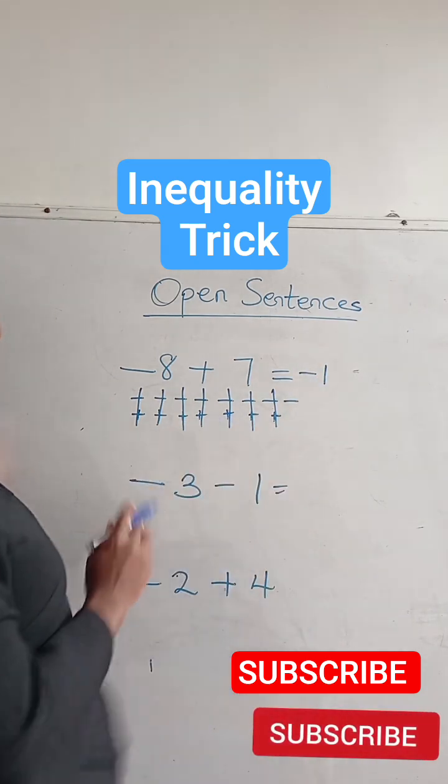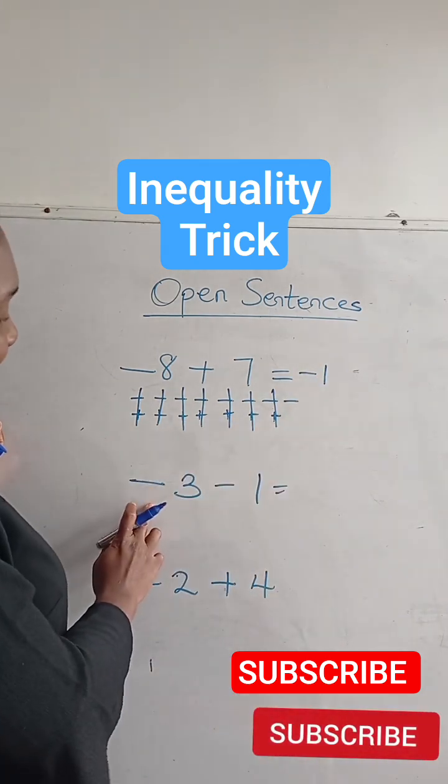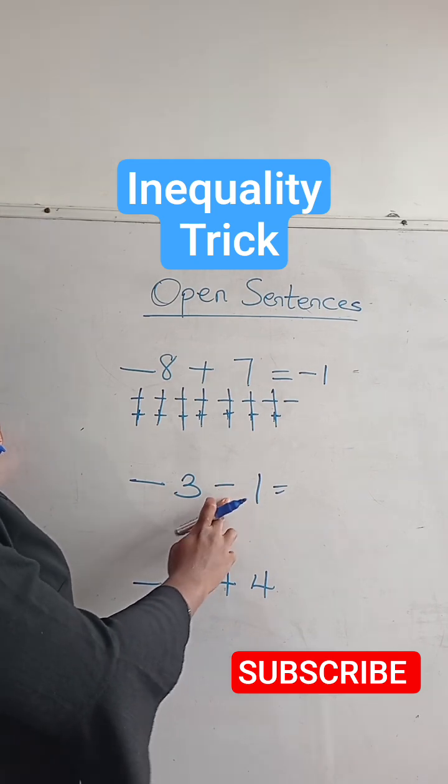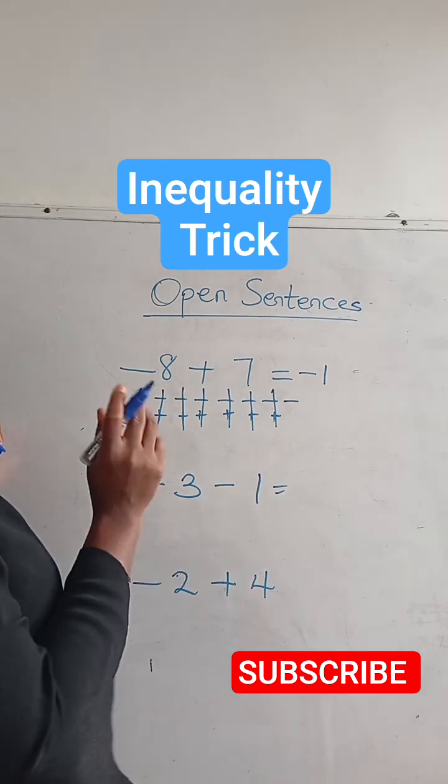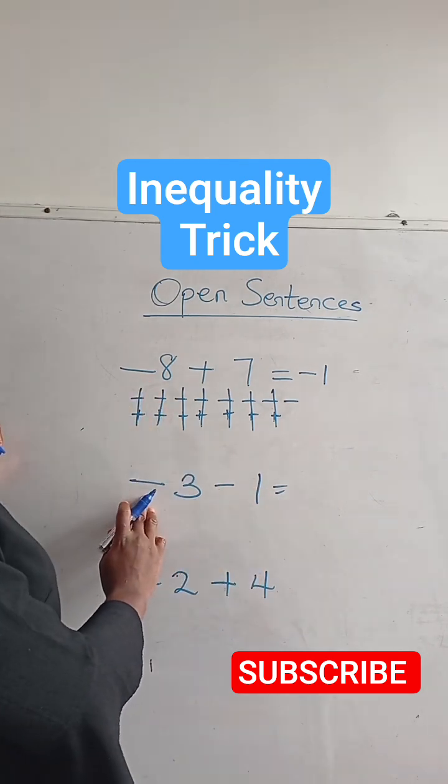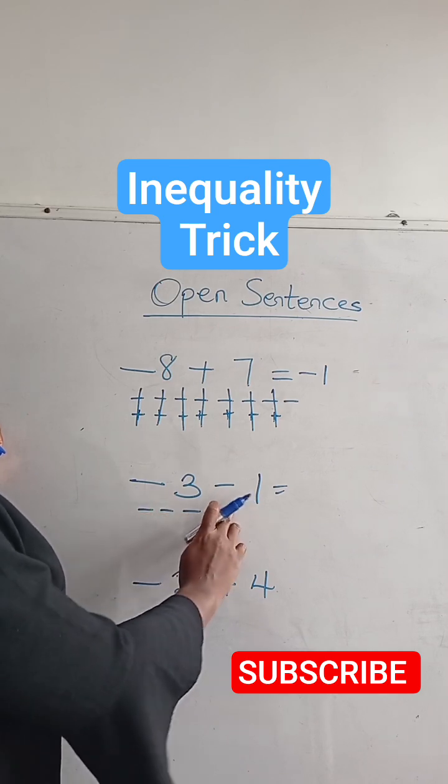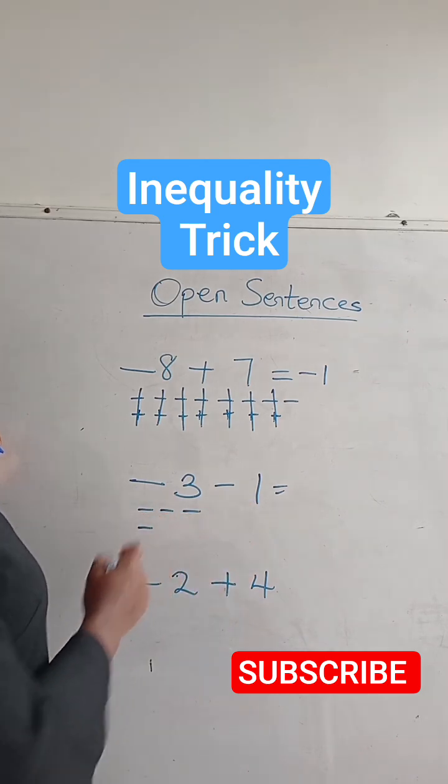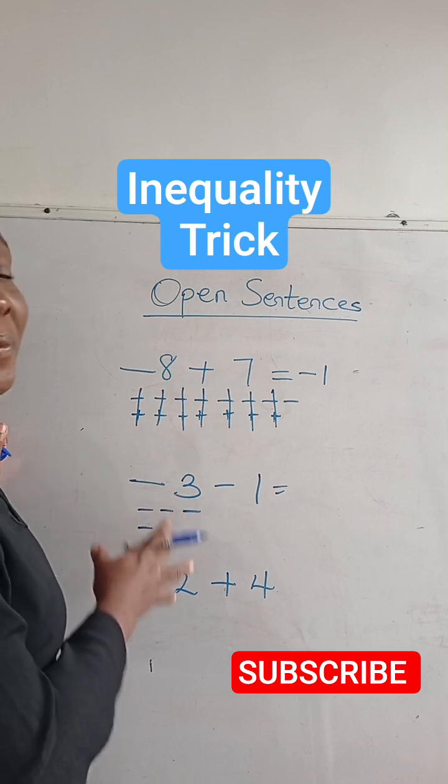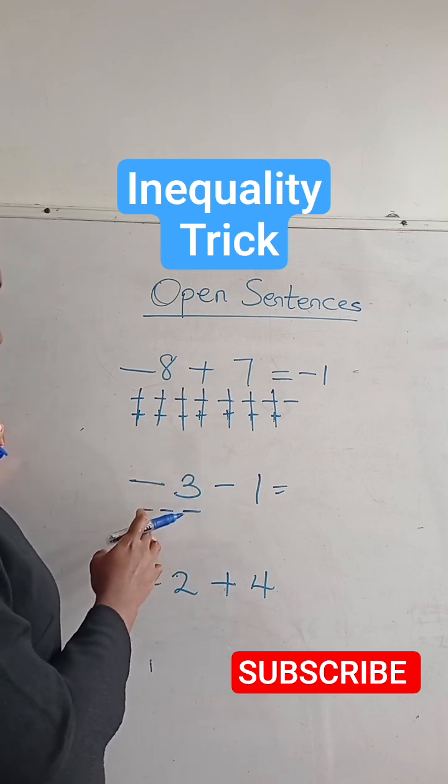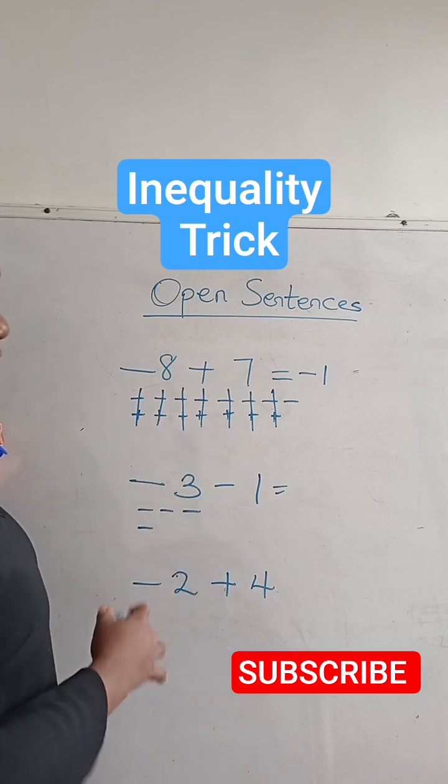So let's do this. Here I have minus three plus one. So I'm going to count three minus: one, two, three, and minus one: one. Now in a situation whereby you have the same sign, what you do is you're going to count all together and not pair them.